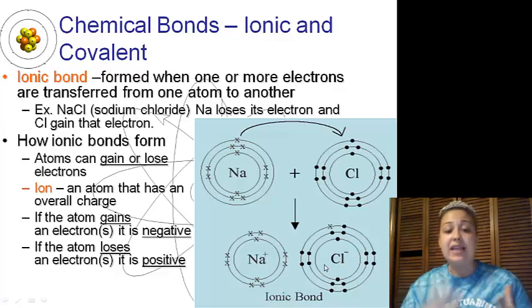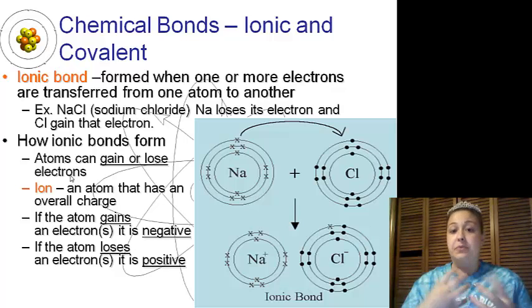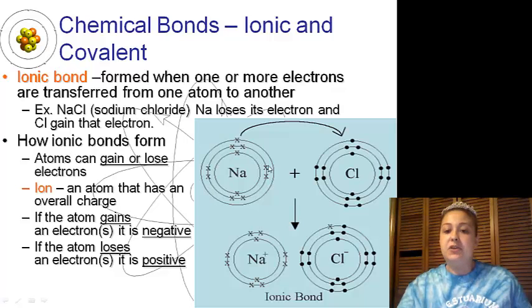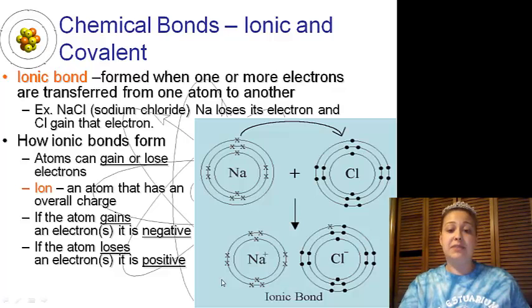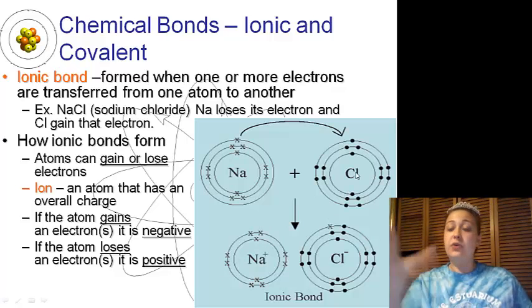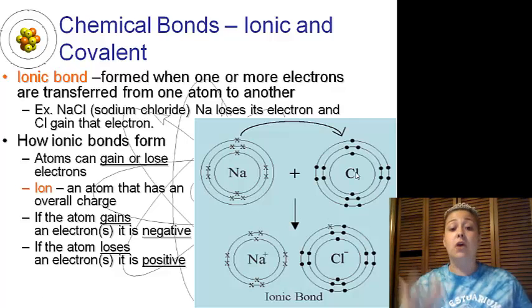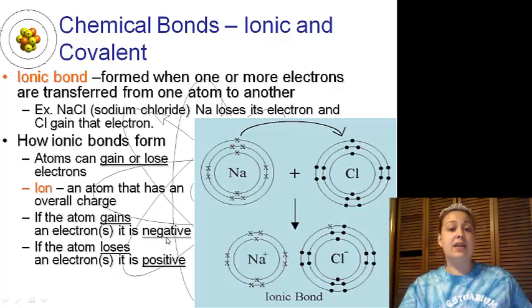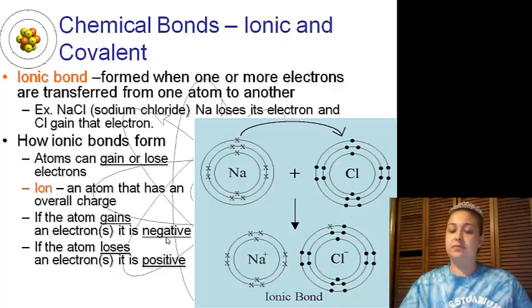This gaining or losing of electrons creates ions. Ions is an atom that has an overall charge. If sodium gives a negative away, it becomes more positive. So sodium becomes a positive ion. Chlorine gains an electron, which is negative, so it gains an extra negative and becomes overall negative. If you gain an electron, you become negative. If you lose an electron, you become positive.